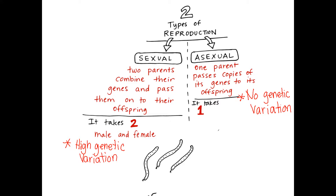With multiple offspring — which is just a fancy word for kids for all types of organisms — there's going to be different DNA passed down. For example, maybe you got your dad's hair but your sibling got your mom's hair. The DNA basically mixes up differently and shows up differently in different kids, and that is what is meant by high genetic variation. Think about dogs of two different colors having puppies — some will look like mom, some like dad, and some might have spots. Variation means differences.